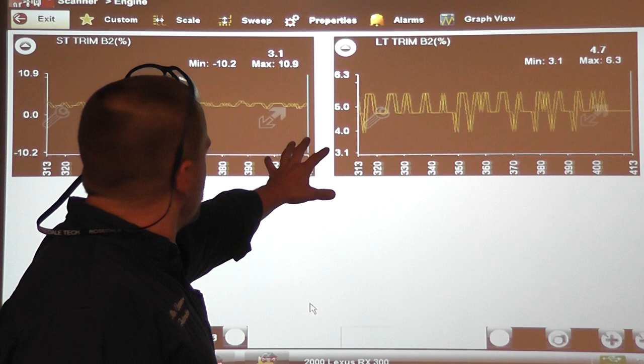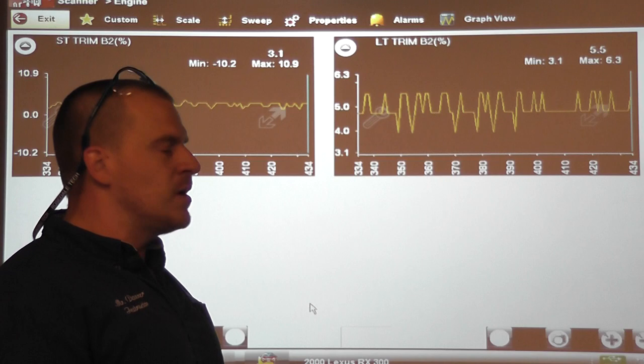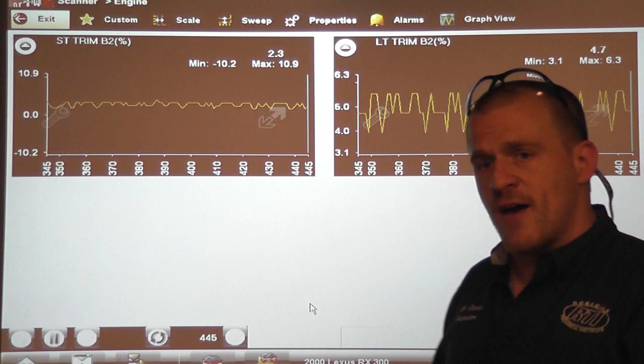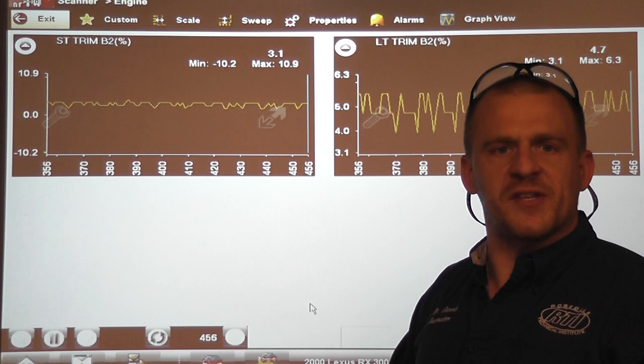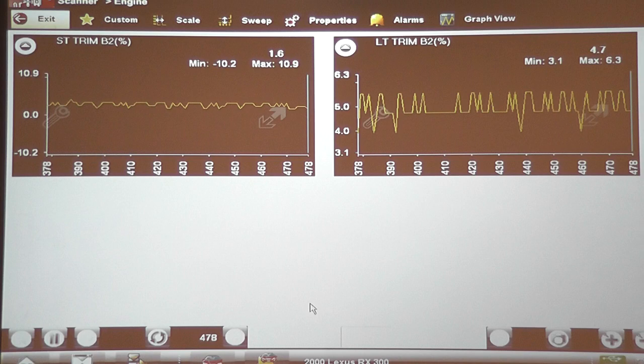You can see that with an ignition misfire, essentially these fuel trim numbers are pretty much useless. If you looked at this by itself and this car came in with an ignition misfire, these wouldn't help me at all because they look pretty normal. The type of misfire that we have is ignition related, but it could also be compression too, because compression is going to do the same thing as far as pumping raw fuel unburned into the exhaust.